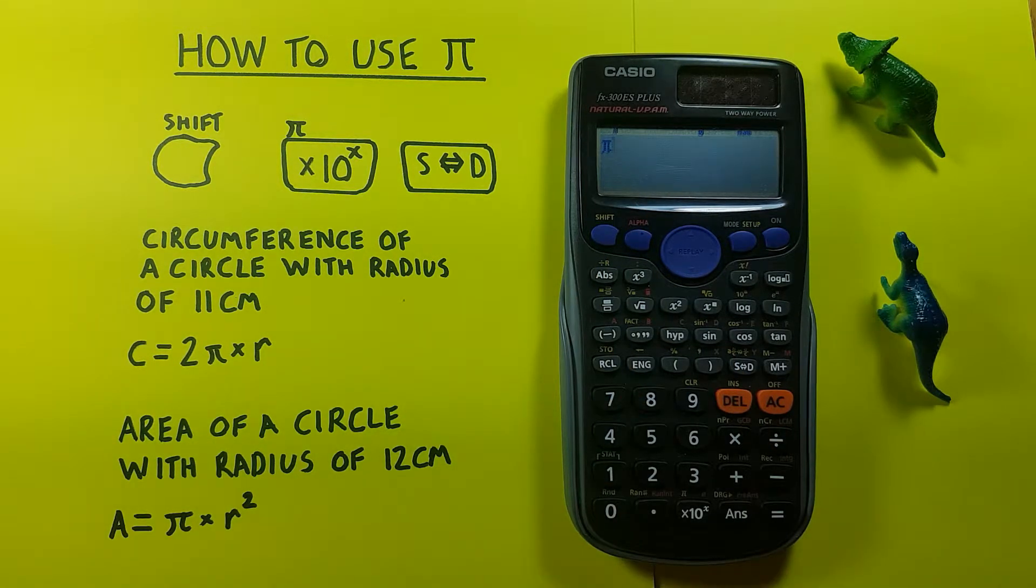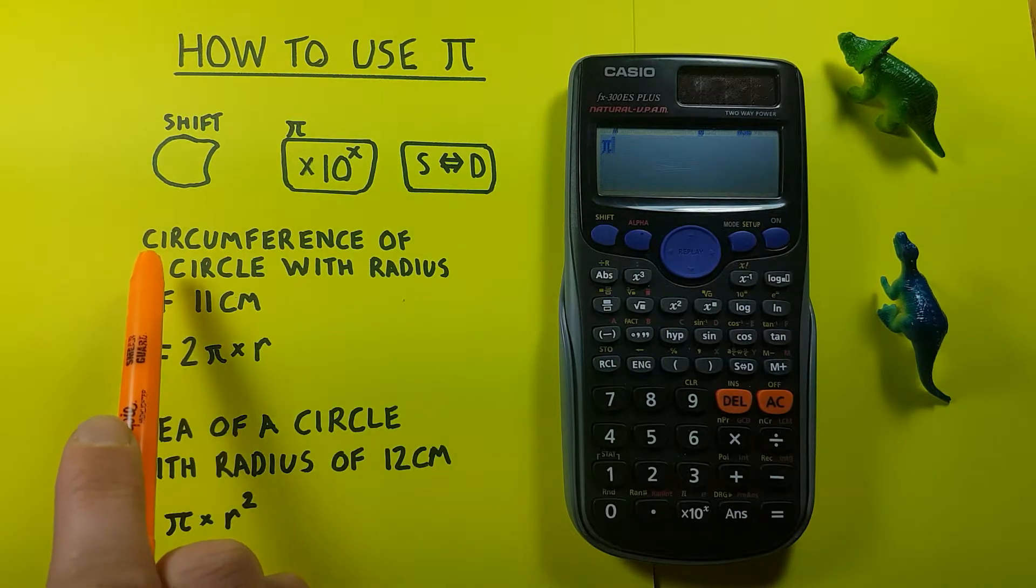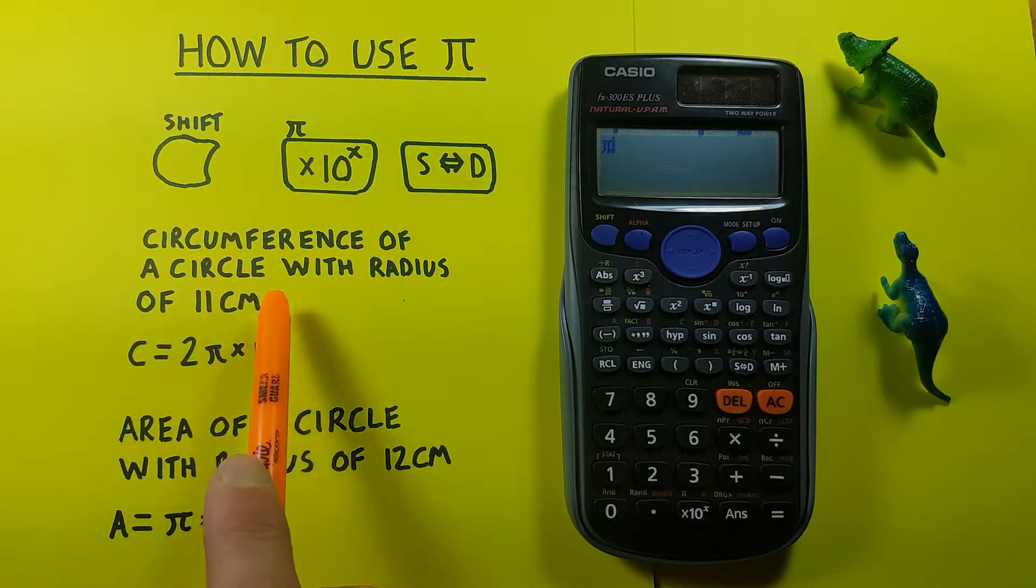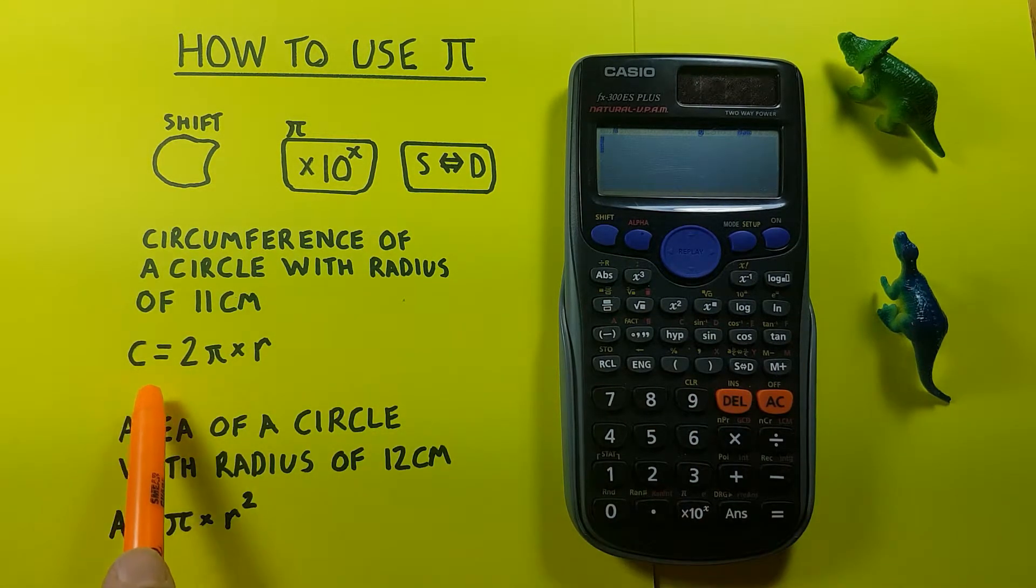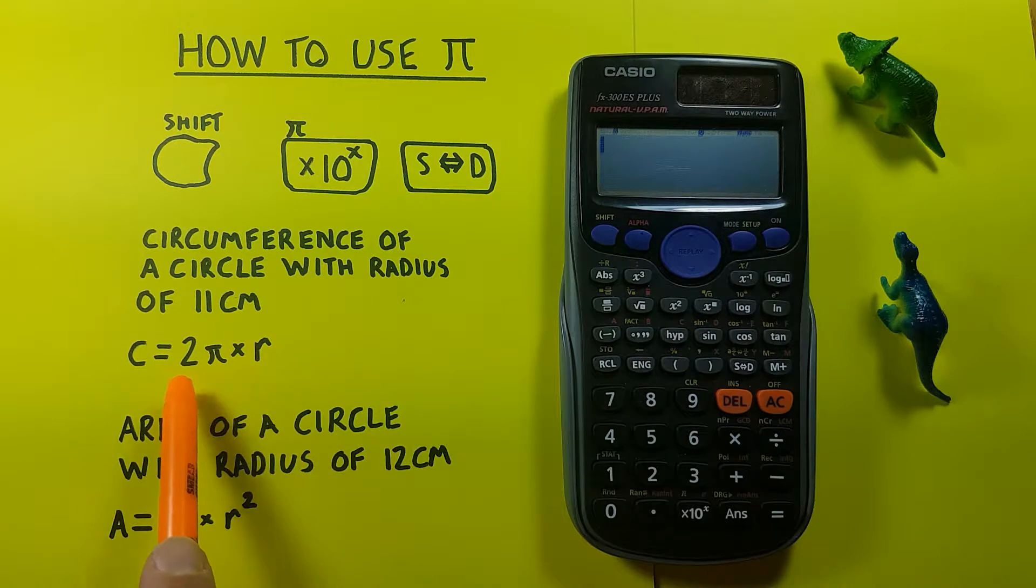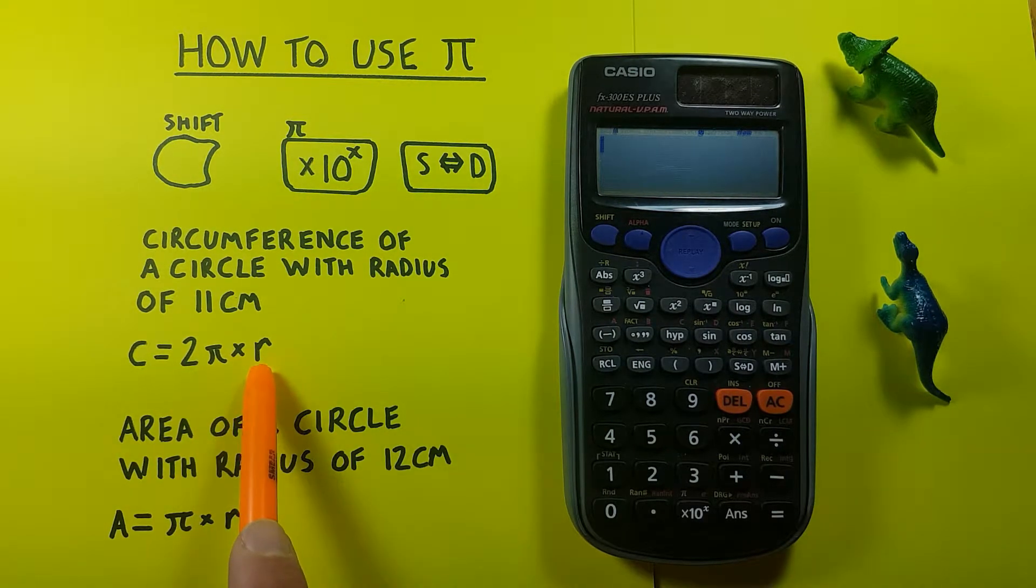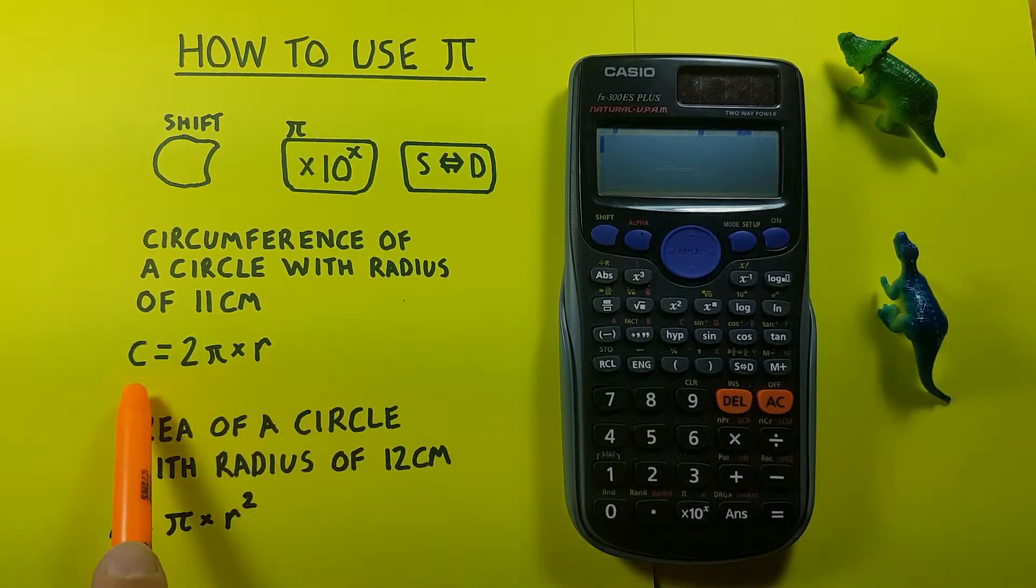We can use this in an equation, for example to determine the circumference of a circle with a radius of 11 centimeters. We can determine that because we know that 2 Pi r or 2 times Pi times r is equal to the circumference.